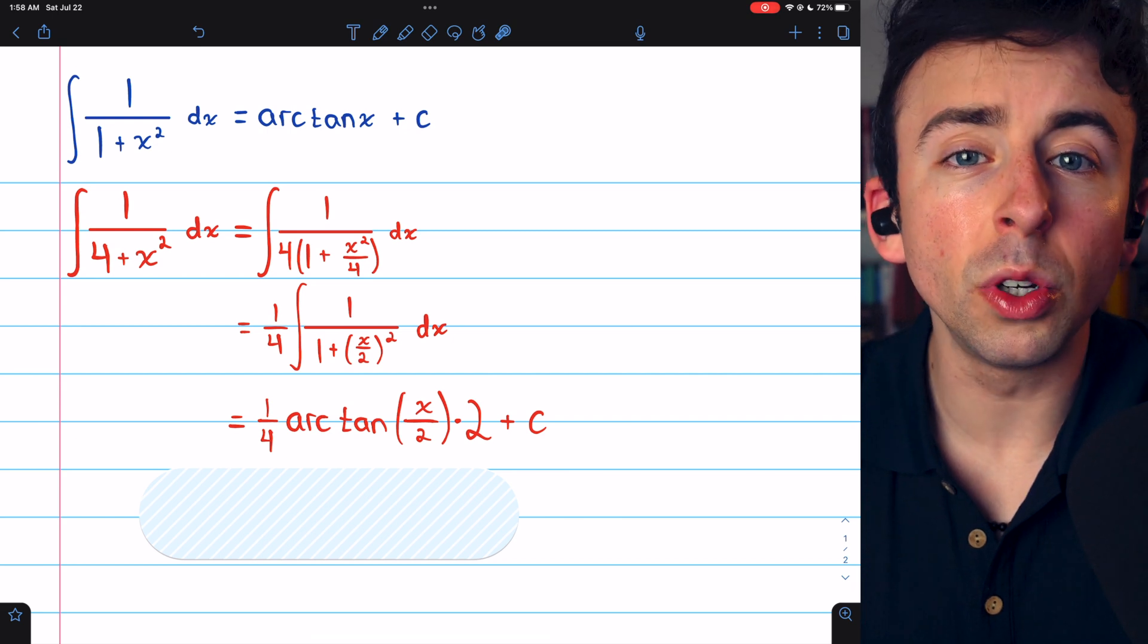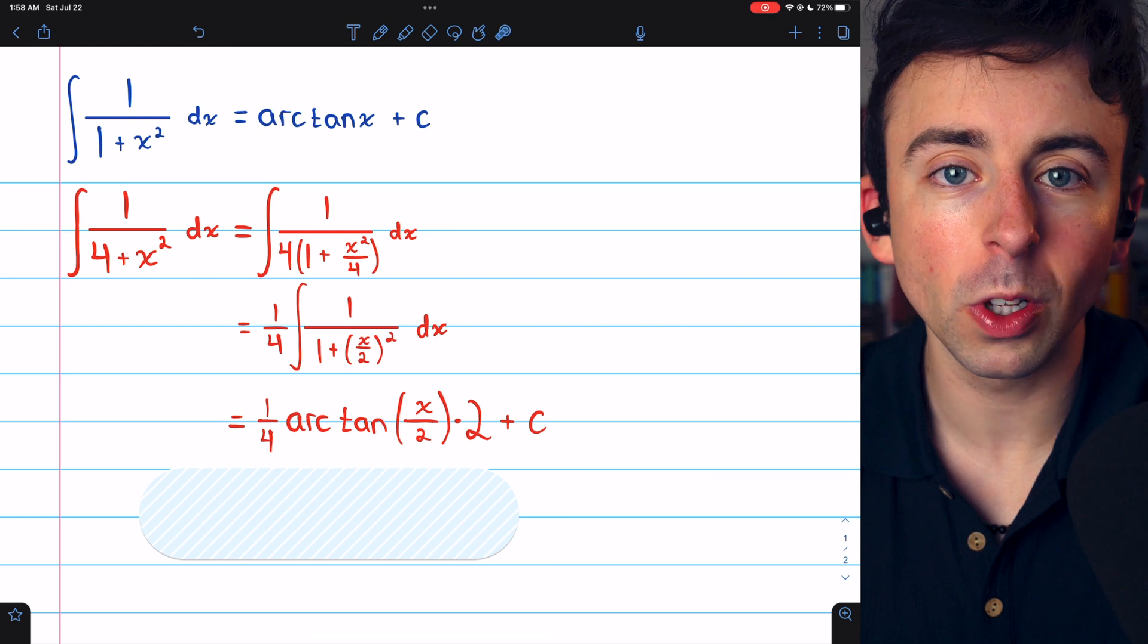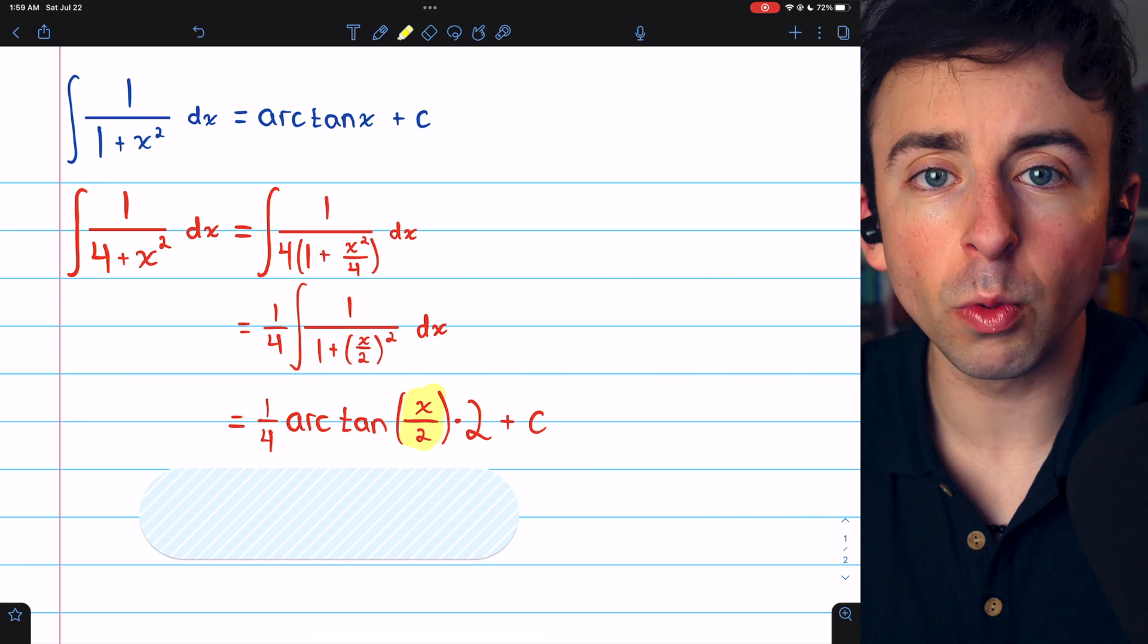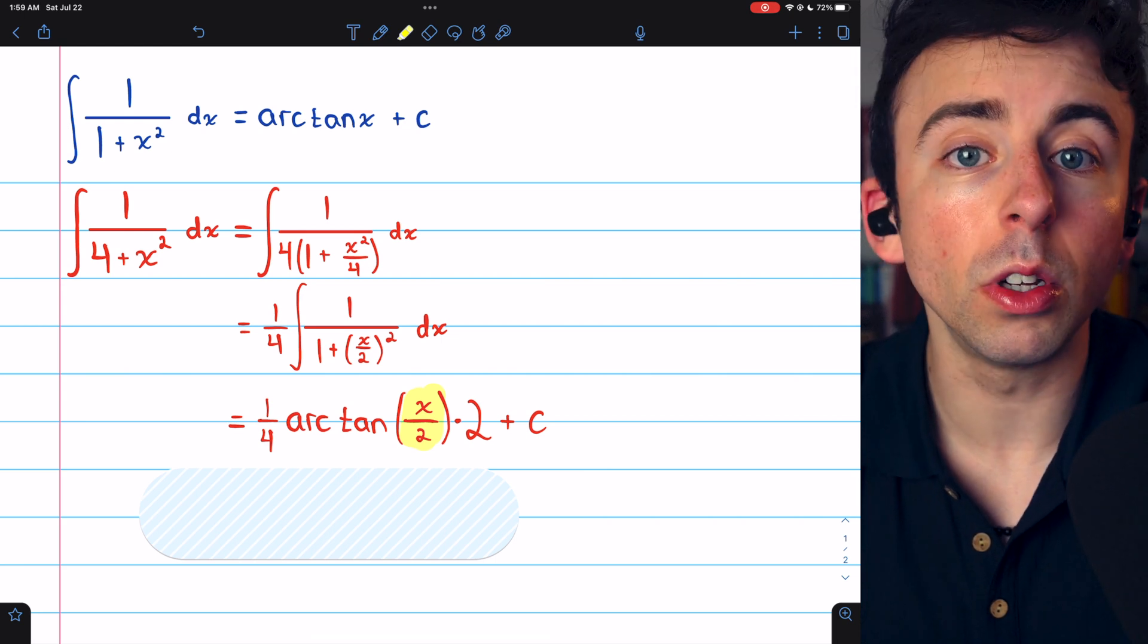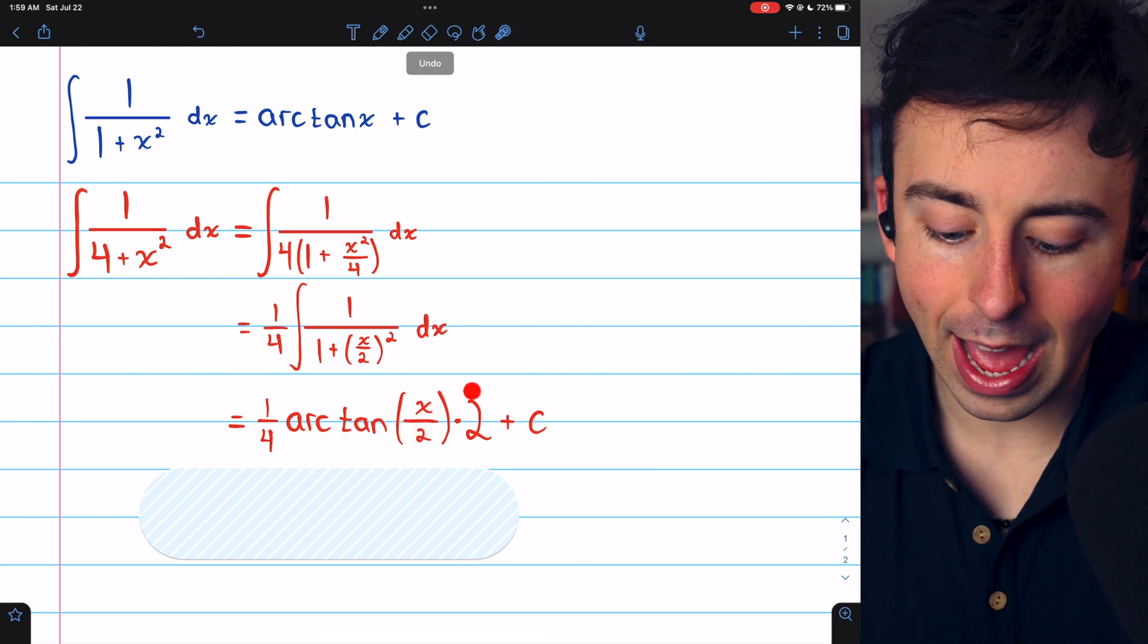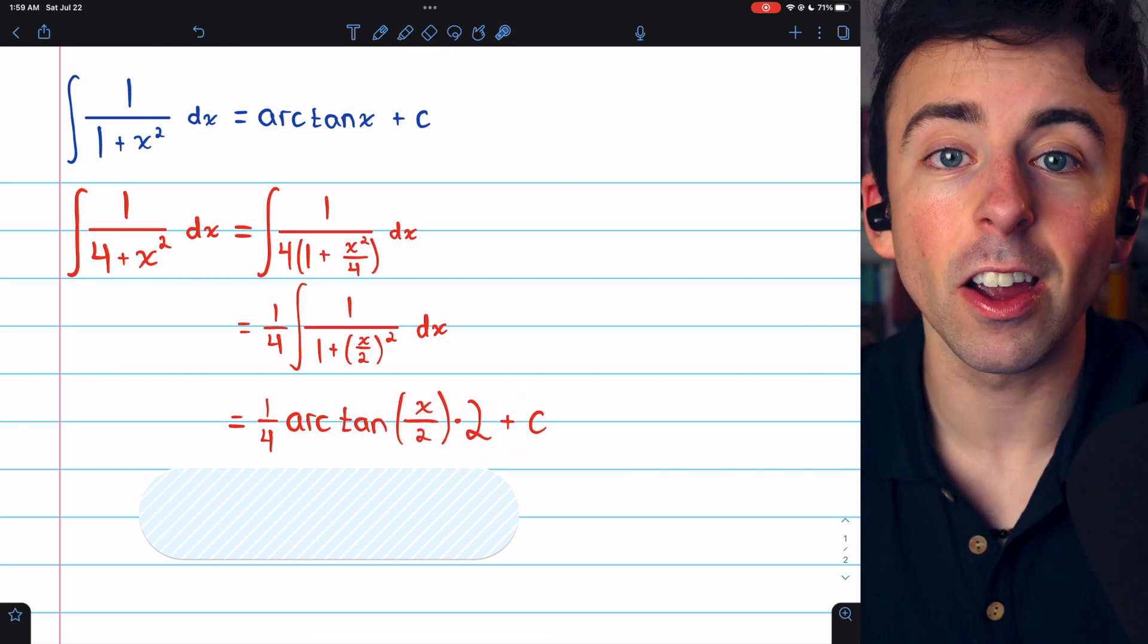We just need to divide by its derivative to account for the chain rule, the derivative of that inside function. x over 2 has a derivative of 1 half, so we need to divide by 1 half to undo that. And dividing by 1 half is the same as multiplying by 2. Then, don't forget to add the arbitrary constant.